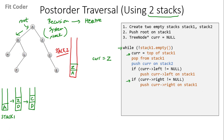We again enter the while loop — stack1 is not empty. Current becomes equal to the top of stack1, which is C. We pop from stack1 and push current onto stack2. We check the left of C, which is null, so this condition is false. We check the right of C, which is E, and we push it on stack1.